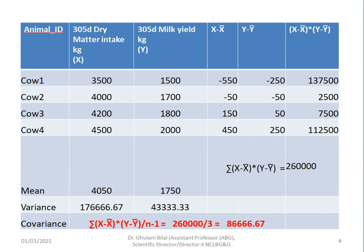We have data for these four cows and we have calculated their means for dry matter intake and milk yield, and also calculated the variance. In the column (x minus x̄), we subtract the mean of x from each value of x: minus 150, minus 50, plus 150, and plus 450. Similarly for y, we subtract ȳ from every value of milk yield: minus 750, minus 250, minus 50, plus 50, and plus 250.